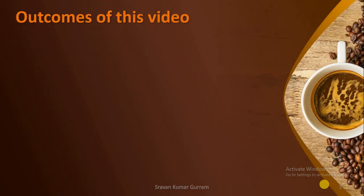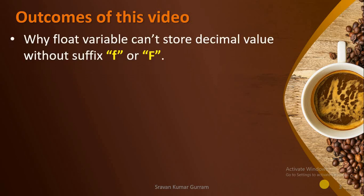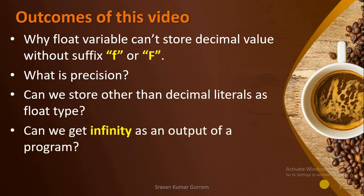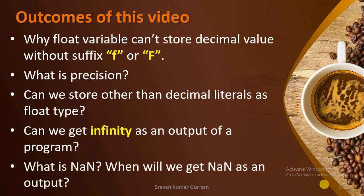In this video, we are going to cover how to store decimal values in a program. After watching this video, you will be able to know why a float variable can't store a decimal value without the suffix small f or capital F, what is precision, whether we can store other than decimal literals as float type, whether we can get infinity as an output, what is NaN, and when we get NaN as an output.